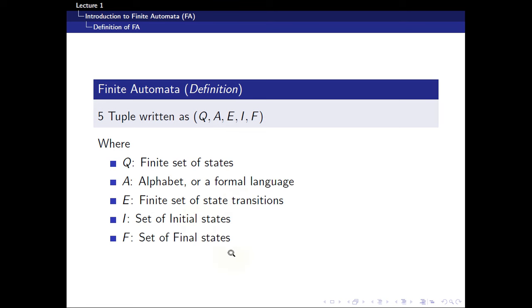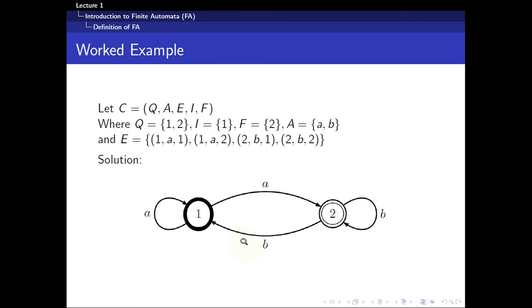For example, we are given this finite automaton C. C has Q equals to 1 and 2, which means that within the two circles you see 1 and 2. The initial state would be labeled as 1. You can see that this bolded state will represent the initial state. It has 1 inside. The final state will be this double circle with 2 in it. The alphabet consists of A and B, which means that everything you see on top of the arrows will be either A or B. And of course the set of transitions.